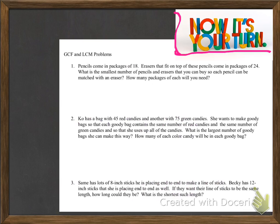Now let's see if you know how to do it on your own. Pencils come in packages of 18 and erasers that fit on top come in packages of 24. What's the smallest number of pencils and erasers you can buy so each pencil can be matched with an eraser? How many packages of each will you need? In your composition notebook, number 1, 2, and 3. Pause the video and jot down whether you think this is an LCM problem or a GCF problem.